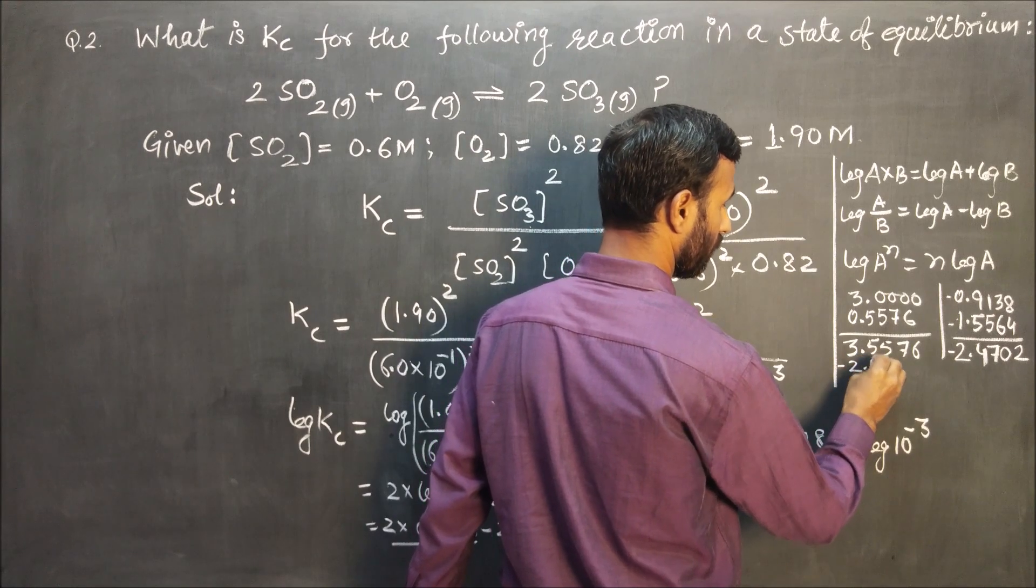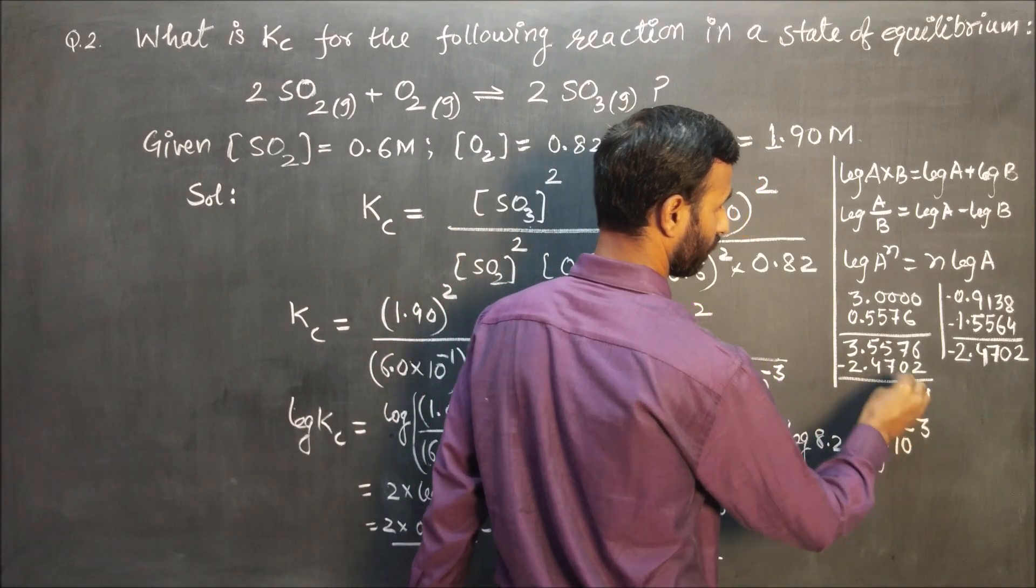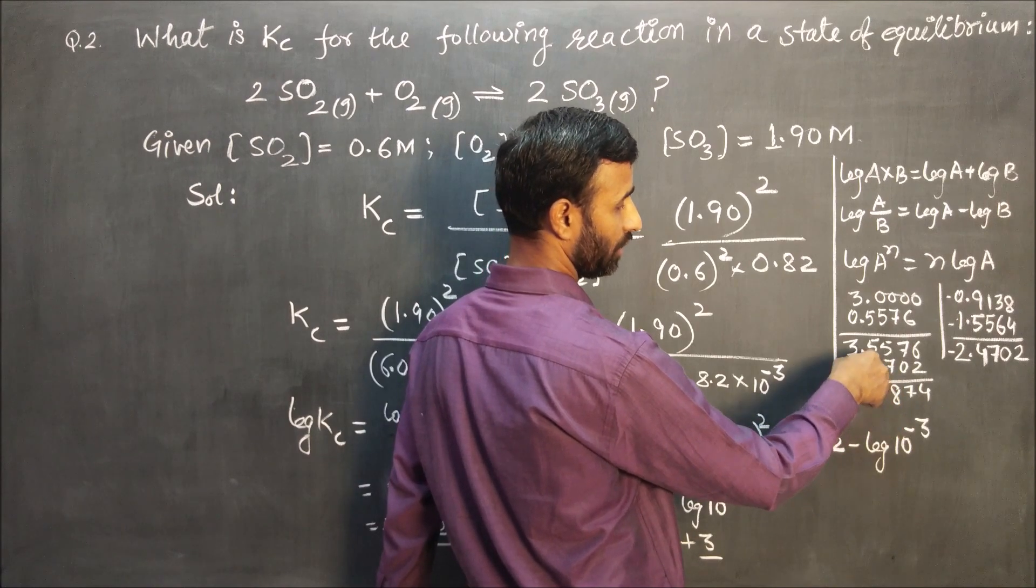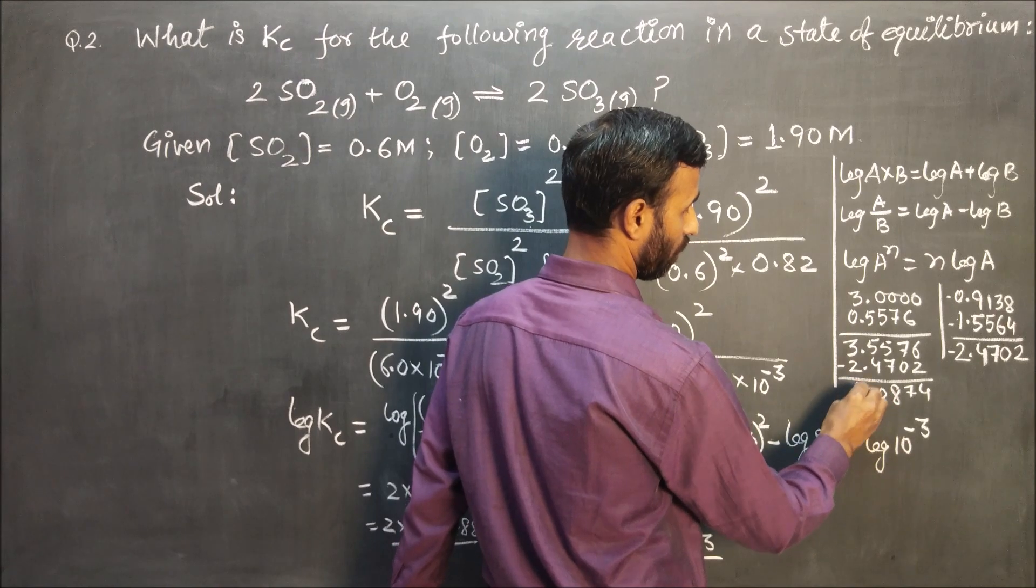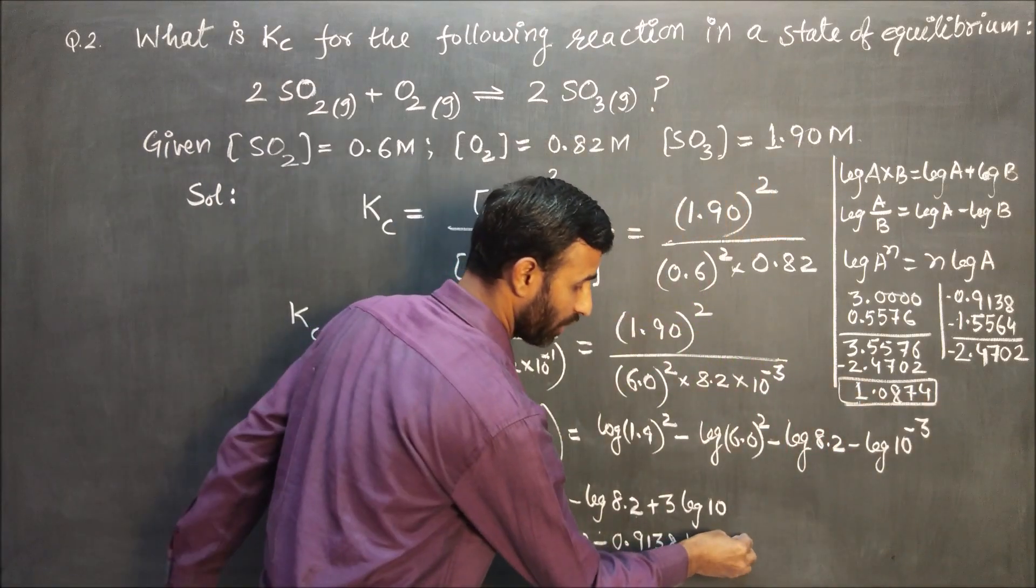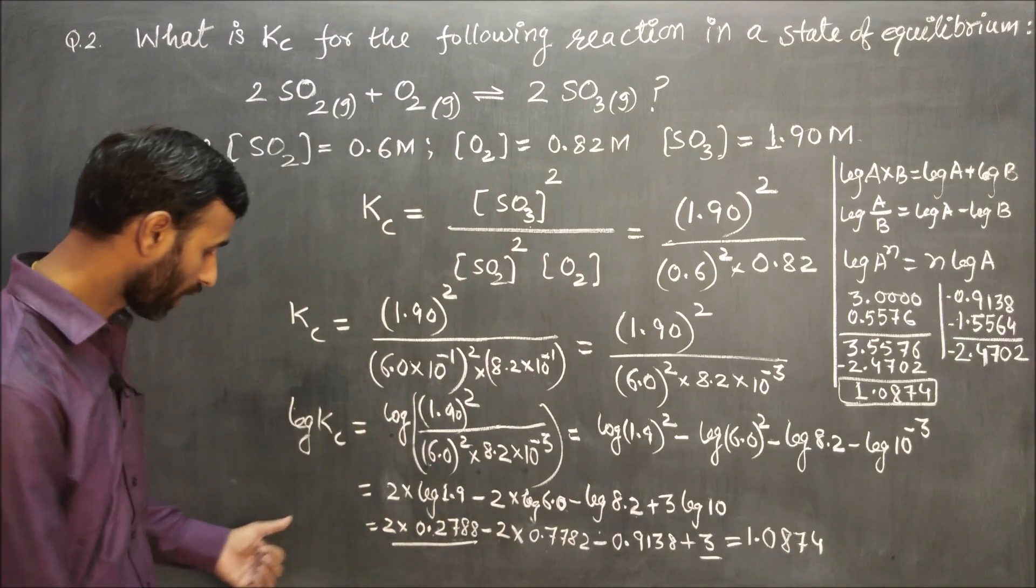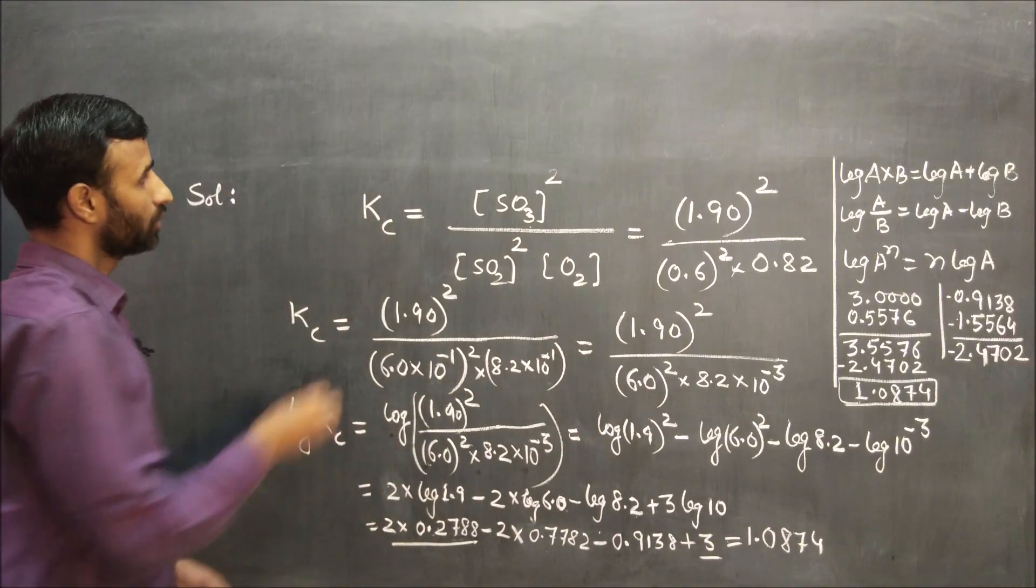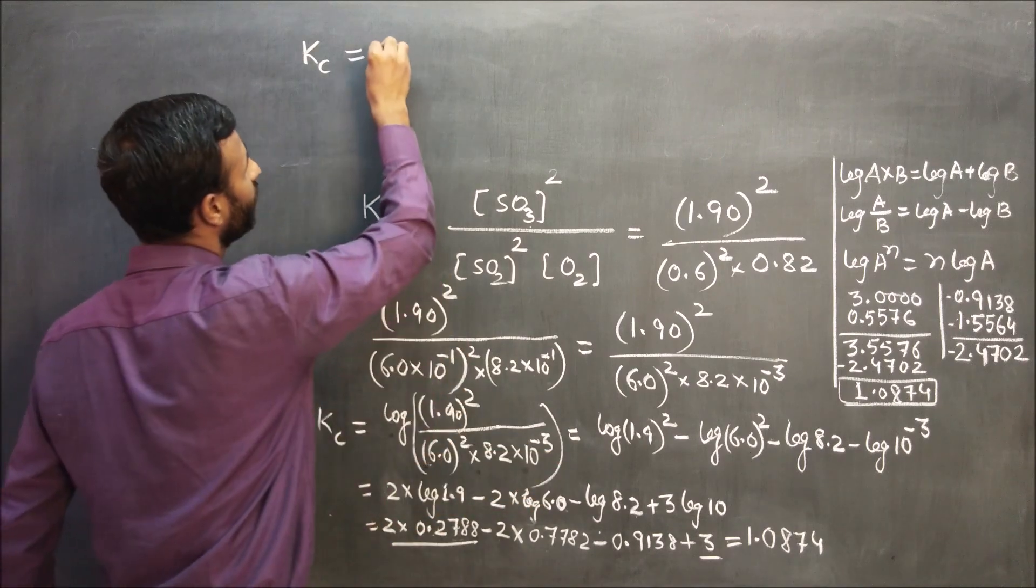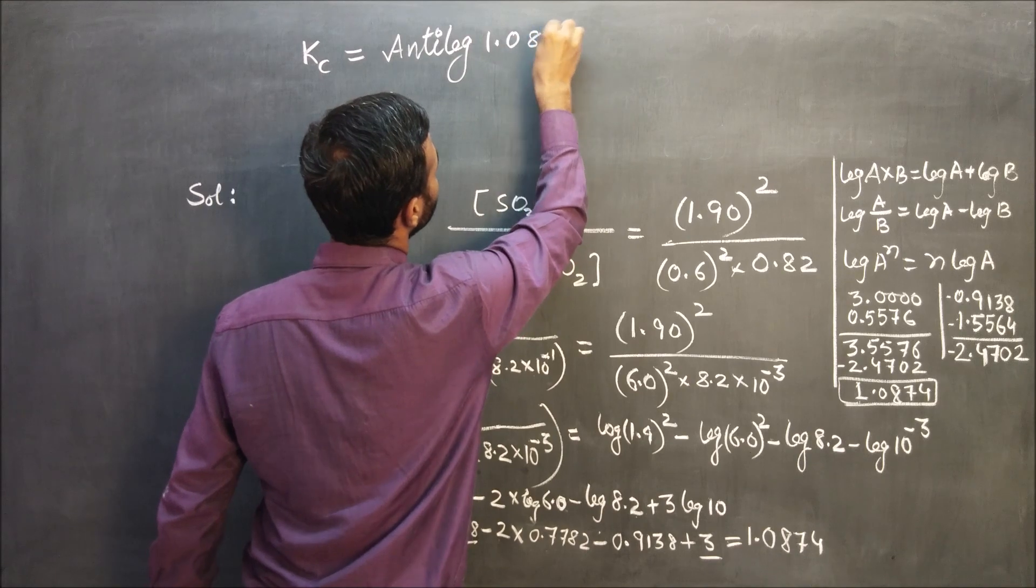Now minus terms: 0.9138 and 1.5564, so 2.4702. So minus this, minus 2.4702, so value comes to 1.0874. So this is the value, log Kc equals 1.0874. Now what is Kc?